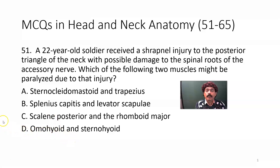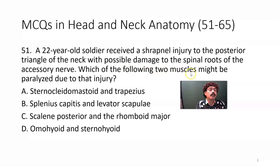Let's start our question. Question number 51: A 22-year-old soldier received a sharpened injury to the posterior triangle of the neck with possible damage to the spinal roots of the accessory nerve. Which of the following two muscles might be paralyzed due to that injury? Sternocleidomastoid and trapezius; splenius capitis and levator scapulae; scalenus posterior and rhomboid major; omohyoid and sternohyoid?